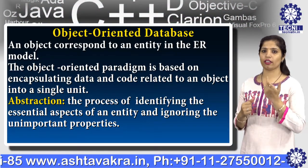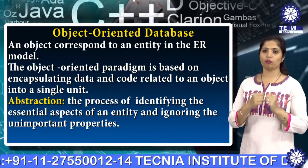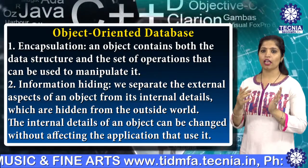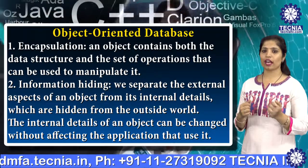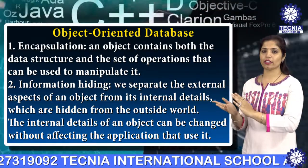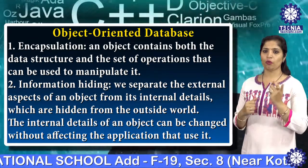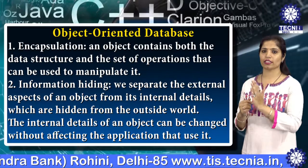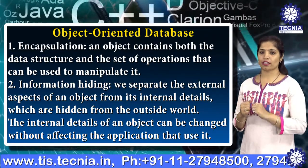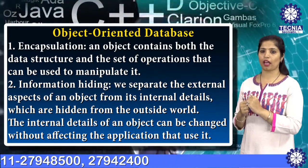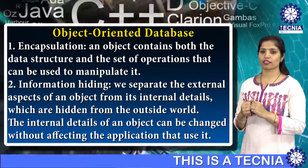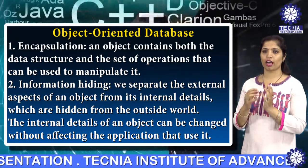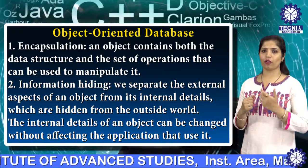In the object-oriented database, various key terms include: abstraction, which is the process of identifying the essential aspects of an entity and ignoring unimportant properties; encapsulation, where an object contains both the data structure and the set of operations that can be used to manipulate it; and information hiding, which separates the external aspects of an object from its internal details hidden from outside. The internal details of an object can be changed without affecting the applications that use it.